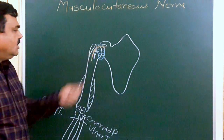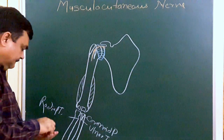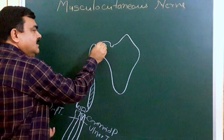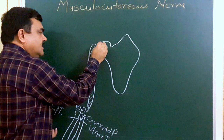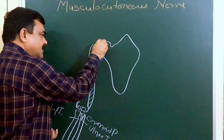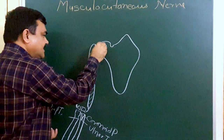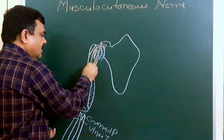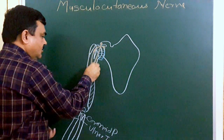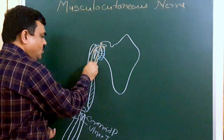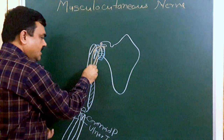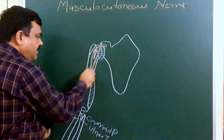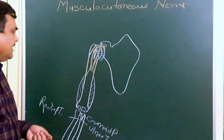This is the long head of biceps. Here is the coracoid process, and from the tip of the coracoid process another muscle arises — this is the short head of the biceps. These two heads, the long head and short head, join and form the belly of the muscle.